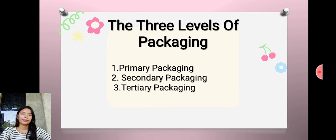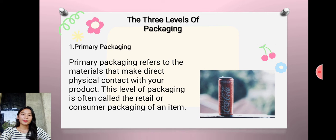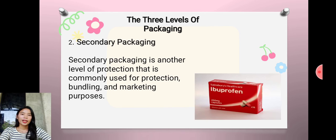The first is primary packaging. Primary packaging refers to the materials that make direct physical contact with your product. This level of packaging is often called the retail or consumer packaging of an item.